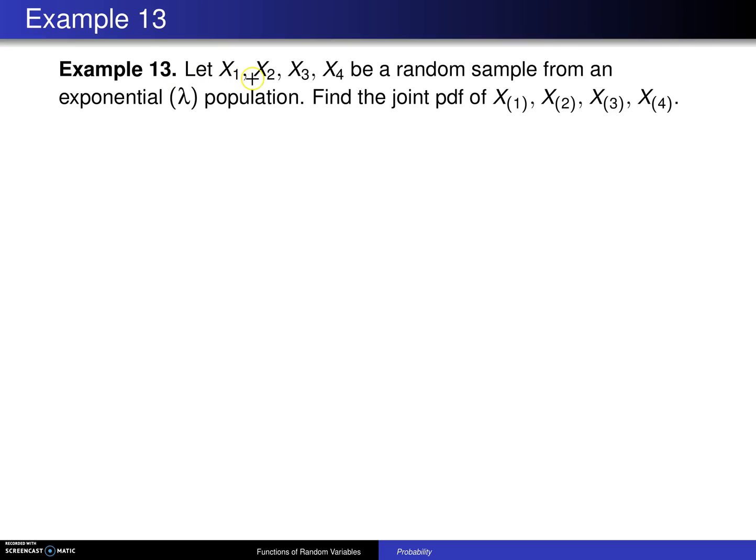Let x1, x2, x3, and x4 be a random sample, and that's the same as saying that they are mutually independent and identically distributed random variables from an exponential lambda population. Find the joint probability density function of those first four order statistics.